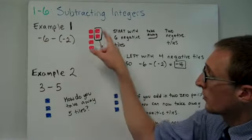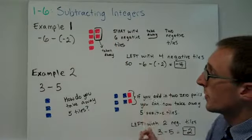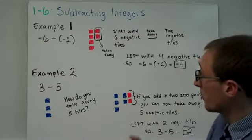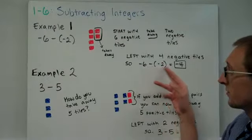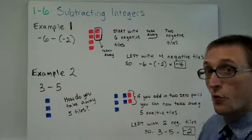Here are 6 red tiles, and we want to take away 2 of them. When we take them away, we're left with 4 negative tiles. So negative 6 minus negative 2 is negative 4.